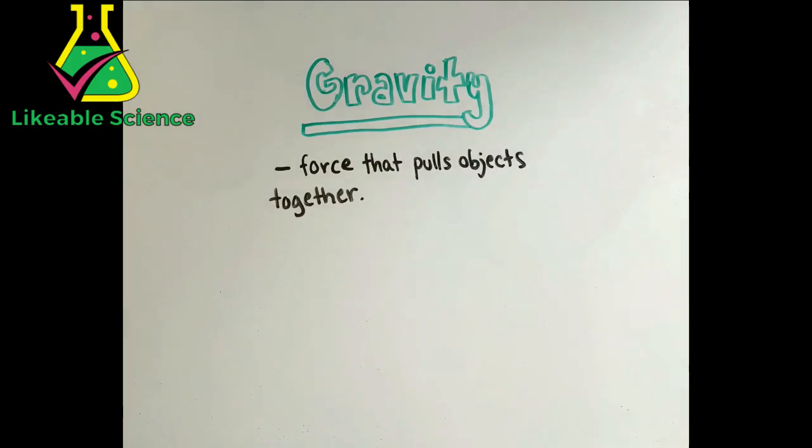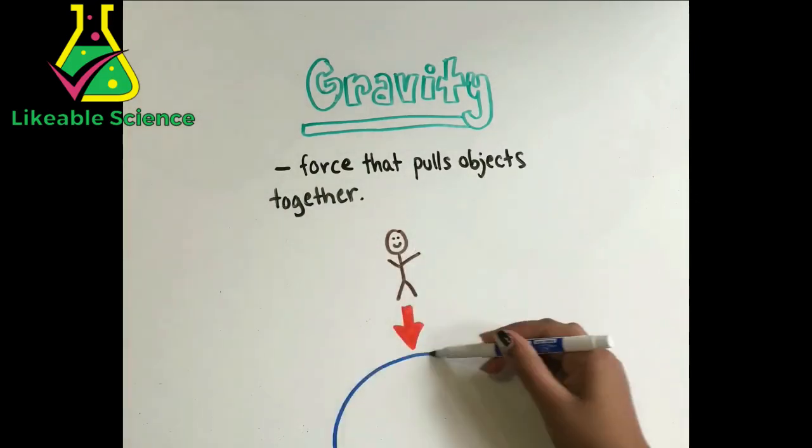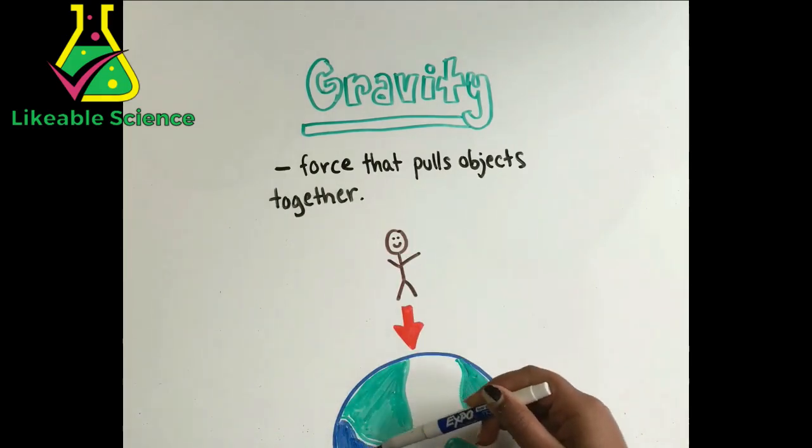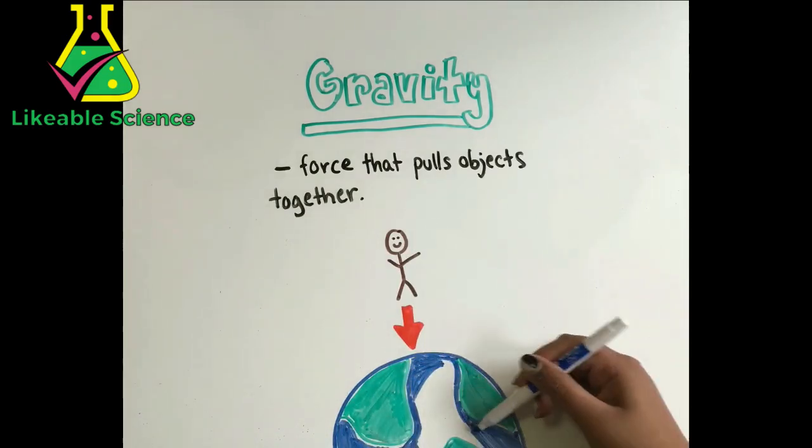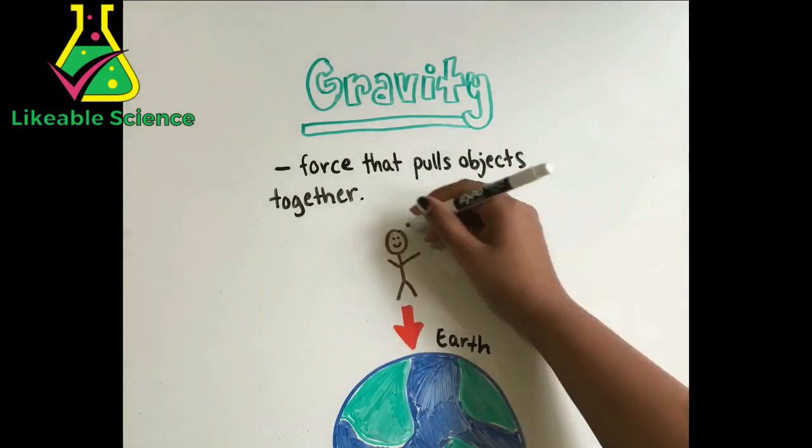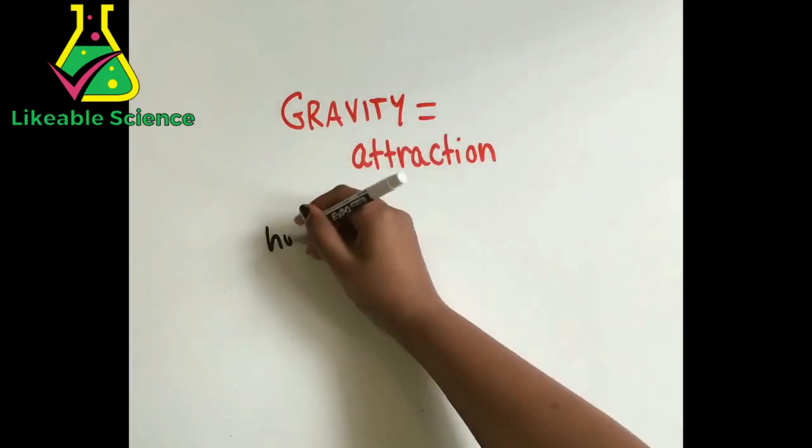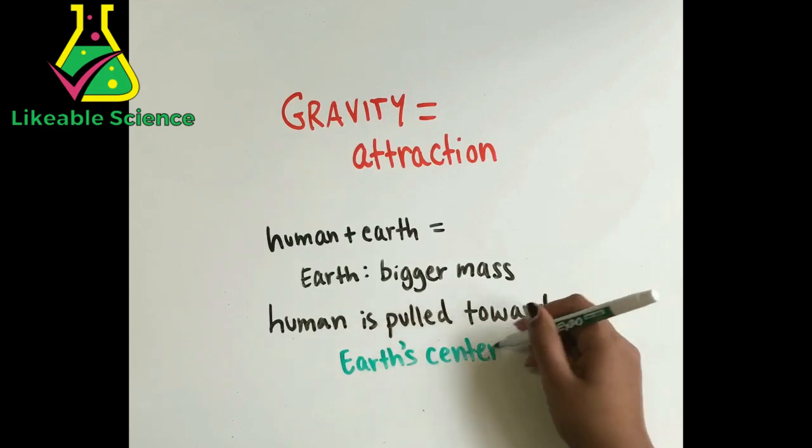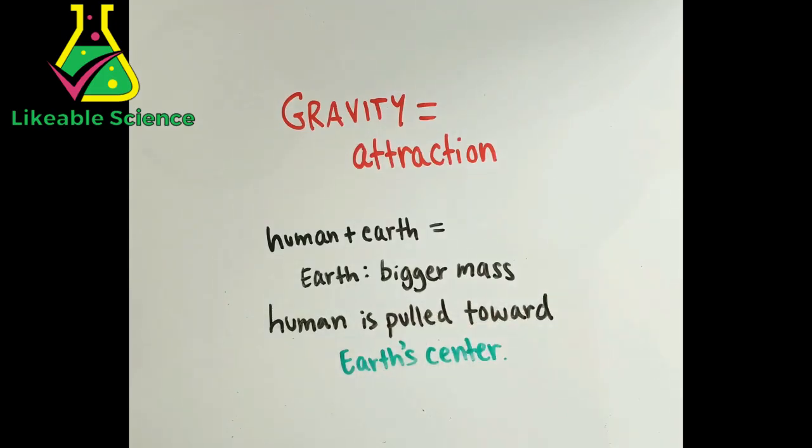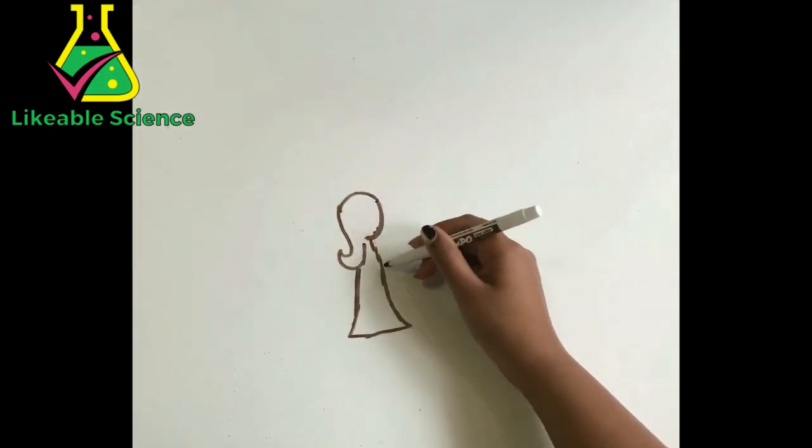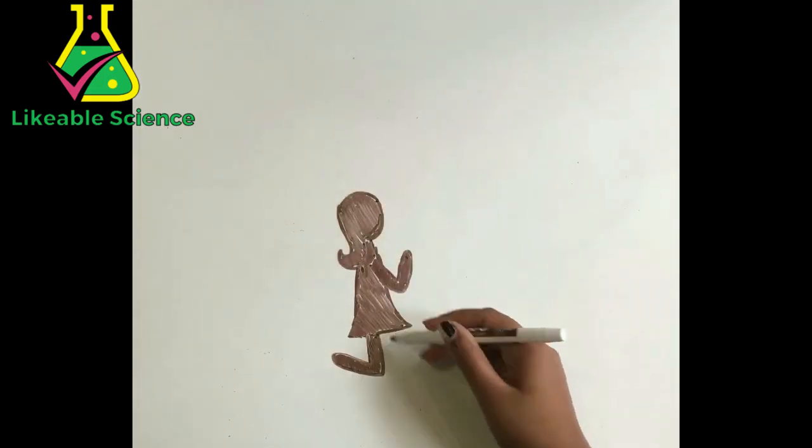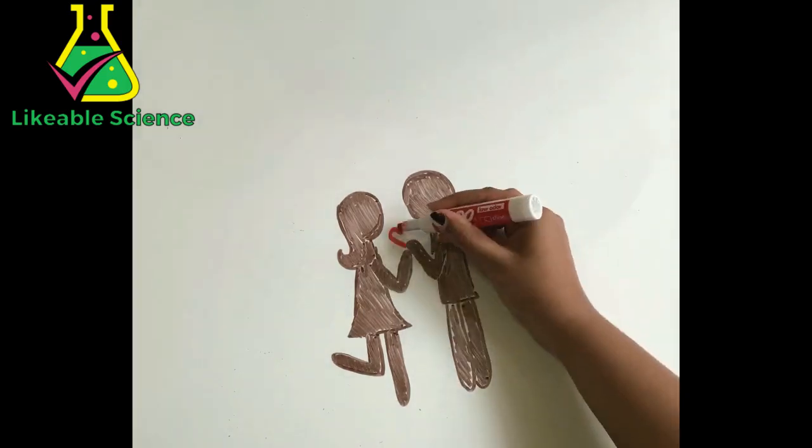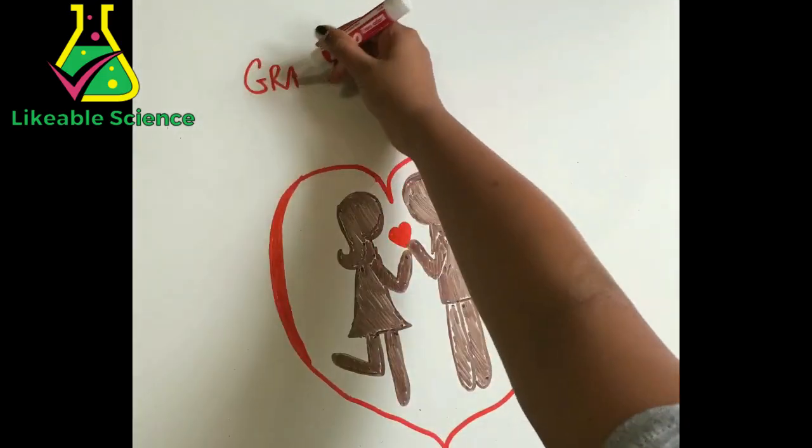Gravity is a force that pulls objects together. For example, when you jump, you fall right back down because gravity is actually pulling you down towards the Earth. Gravity is when any two objects with mass are attracted to each other. Since the Earth has a bigger mass than you, you're naturally pulled towards the Earth's center. So if you're attracted to anything that has mass, you're also attracted to humans. So couldn't that technically explain how attraction makes humans fall in love?